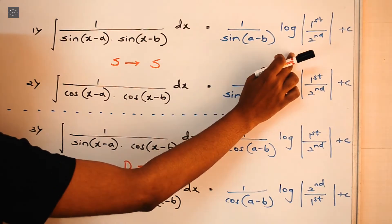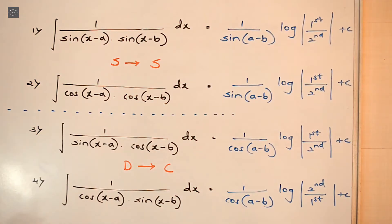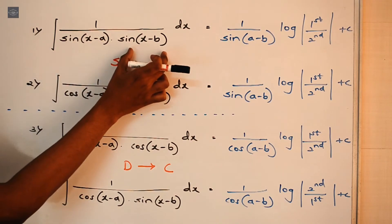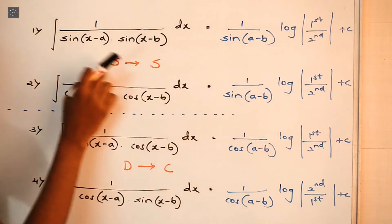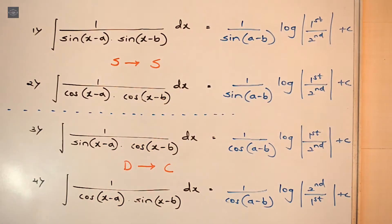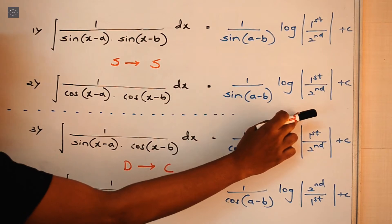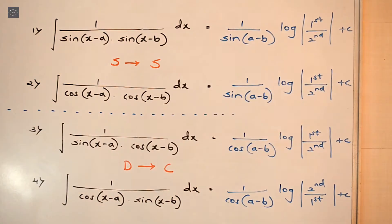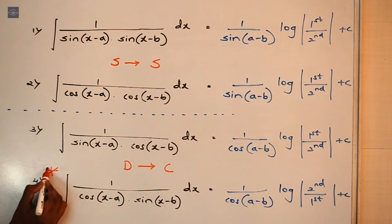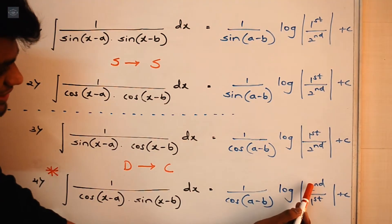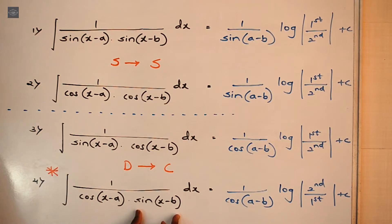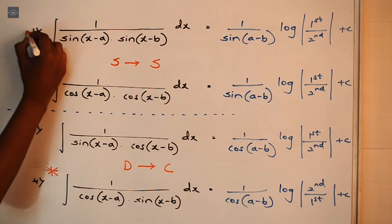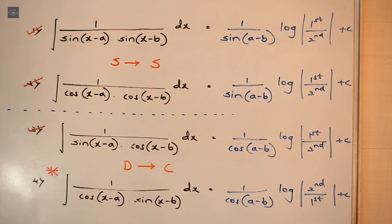Then you just need to add log of the first term upon the second term. Here the first term is sin(X − A) and the second term is sin(X − B), so it will be log of sin(X − A) upon sin(X − B), plus C. The same pattern applies for the other integrals — log of first term upon second term. For the fourth integral it is a different case: here we have log of the second term upon the first term, meaning sin(X − B) on top. For the last three integrals, it is log of first term upon second term.